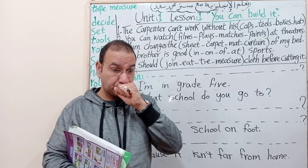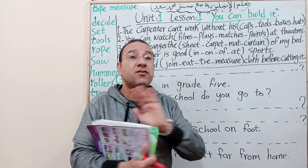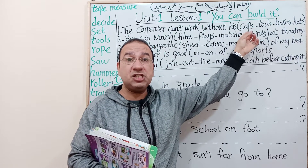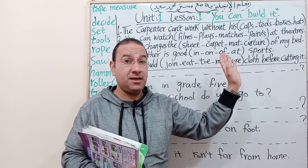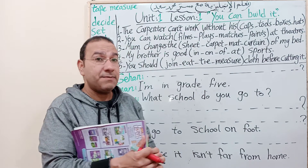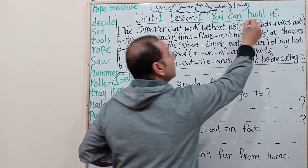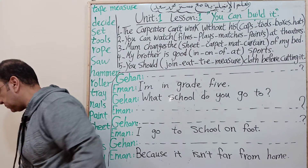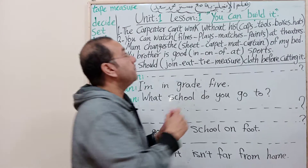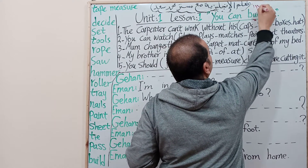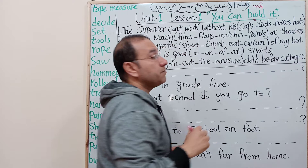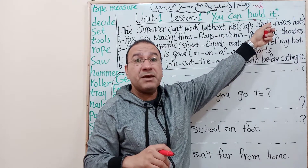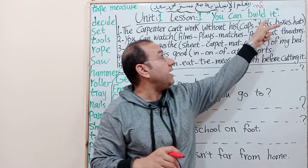The infinitive means the verb with no additions - no 's,' no '-ing,' no '-ed,' no 'to,' nothing added. So in 'you can build it,' 'build' is the infinitive written here in another color. 'It' here is an object pronoun - we know it's an object pronoun because it comes after the verb.